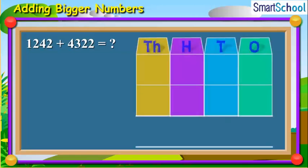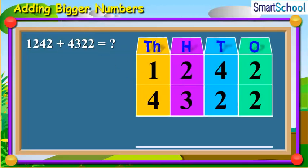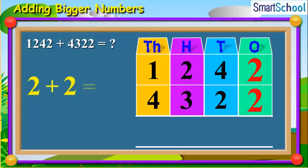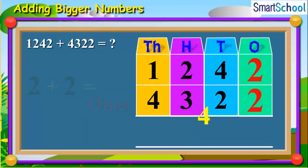Let us first place the numbers as shown. Now, as already learnt, add the ones together, which will be 2 plus 2 is equal to 4 ones. Now, place 4 at the ones place.